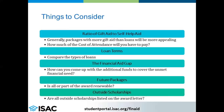Once you have the side-by-side comparison, there are a few things you should consider, such as the ratio of gift aid to self-help aid. Generally, packages with more grants and scholarships will be more appealing — remember that gift aid generally does not have to be repaid. You should also compare the types of loans, as subsidized loans will be more appealing because the federal government pays the interest on your behalf while you are enrolled at least half-time and during certain authorized periods of deferment.